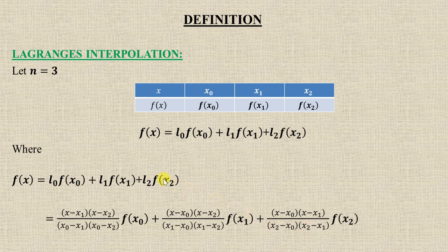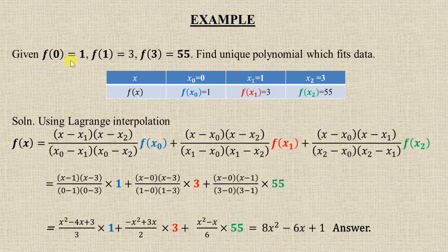Let's consider an example where f(0) = 1, f(1) = 3, f(3) = 55. So x₀, x₁, x₂ are given with their functional values. The data is given and you need to find the polynomial function using the Lagrange interpolation formula.